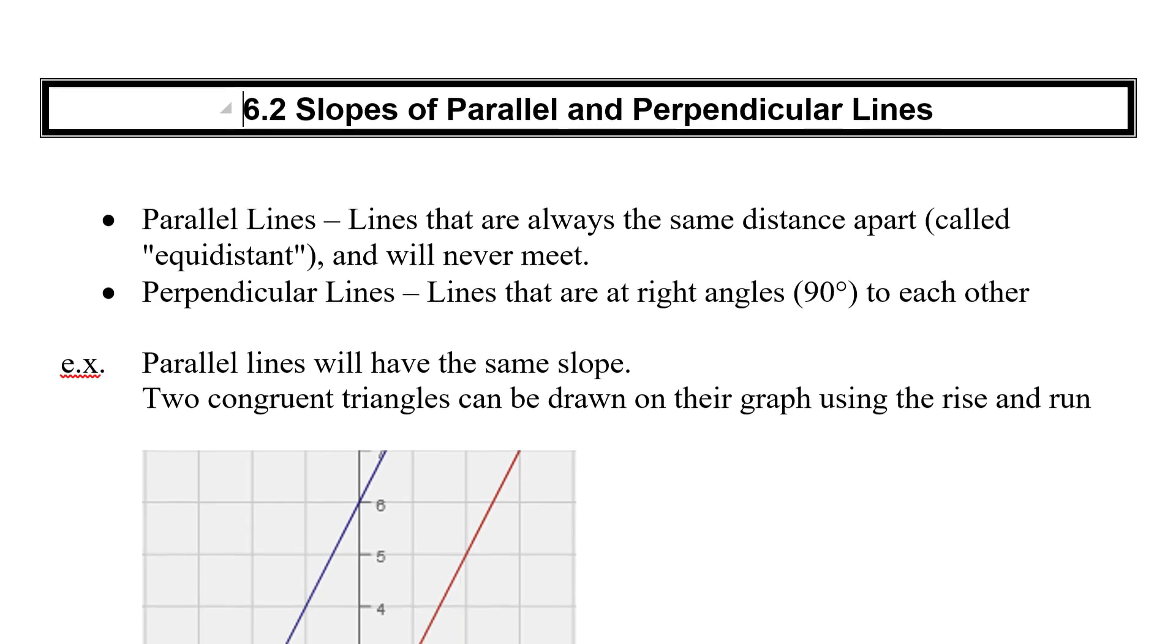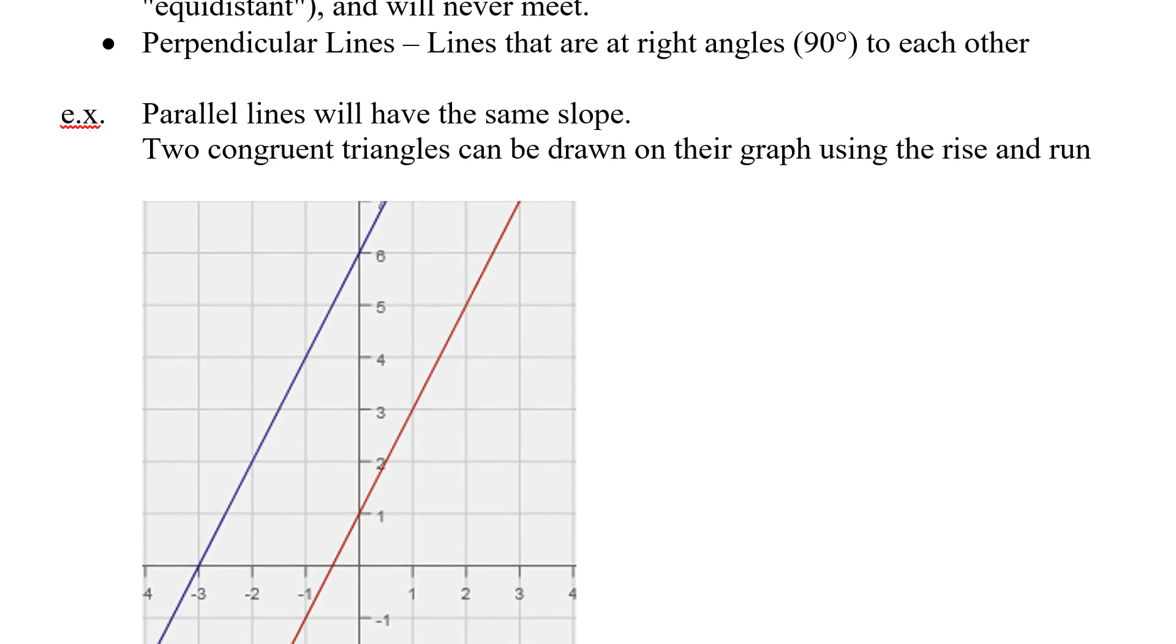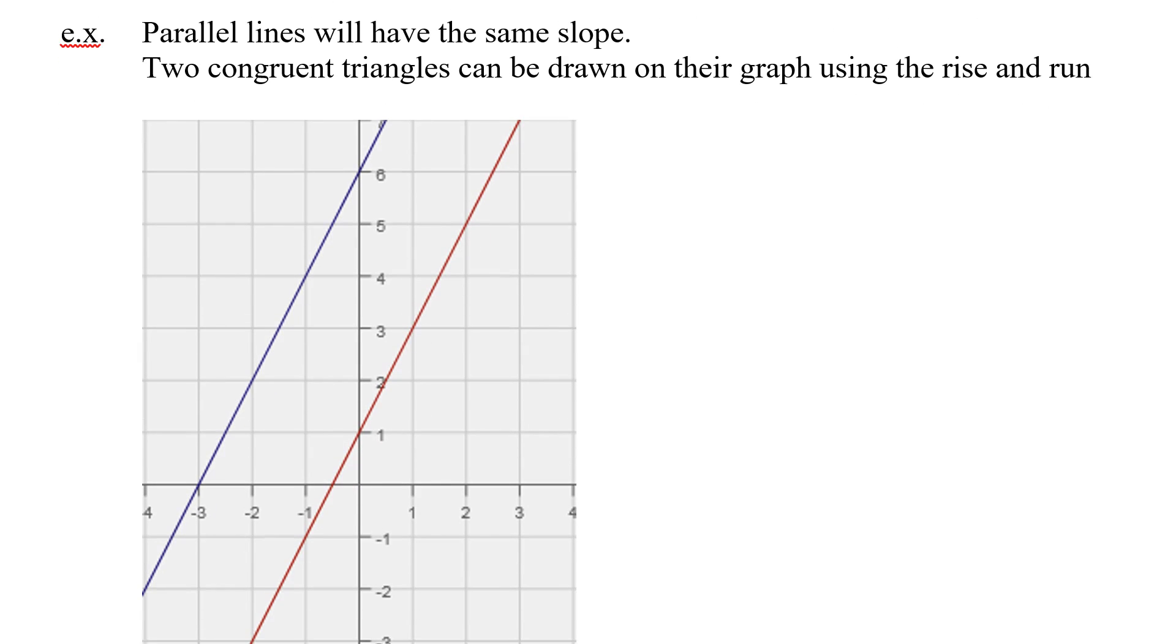So let's look at an example about two parallel lines. In this example here, we're told that these two lines are parallel. So if they're parallel, they will have the same slope. And that's pretty key. In order for them never to get closer or further apart, the slopes have to be the same. One little test you can do is you can draw two congruent triangles to represent the rise and the run. Now congruent simply means the same, same size.